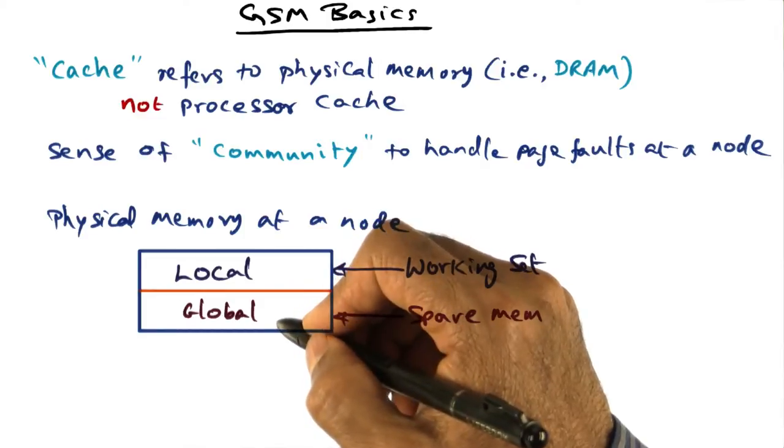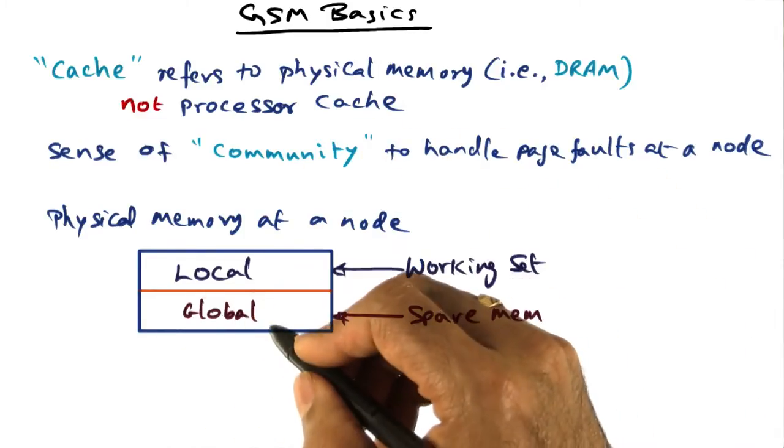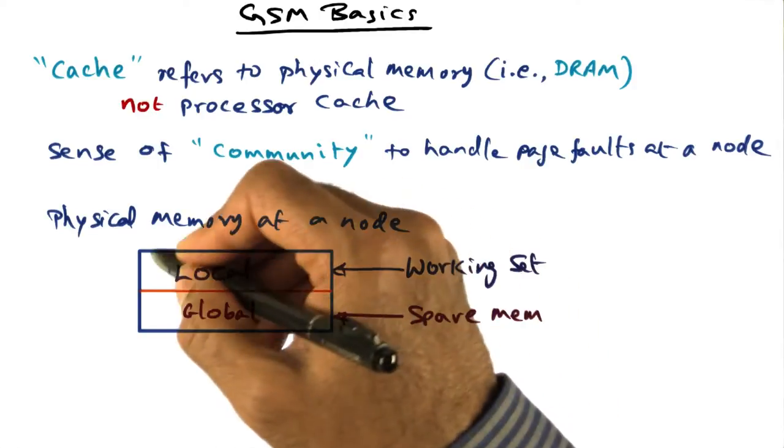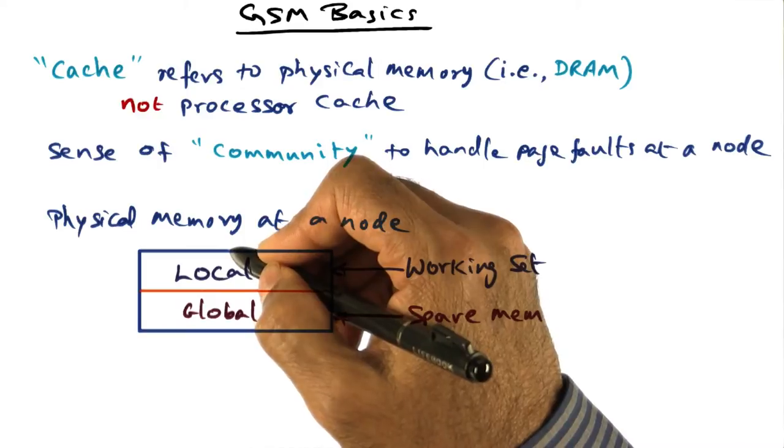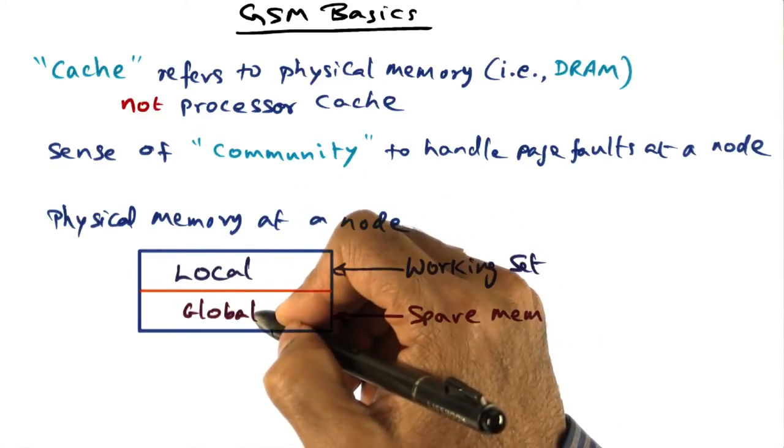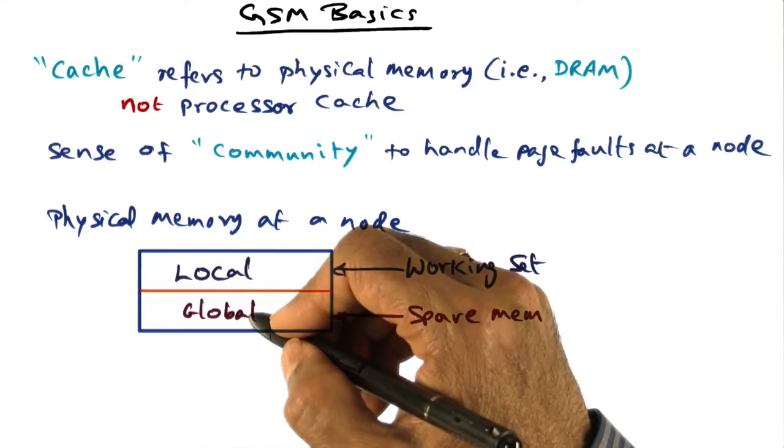Now the global is similar to a disk. The global part is where community service comes in. That is, out of my total physical memory, this is the part that I need to keep all the processes happy in my node. And this is the part that I'm willing to use as space for holding pages that are swapped out from my fellow citizens on the local area network.